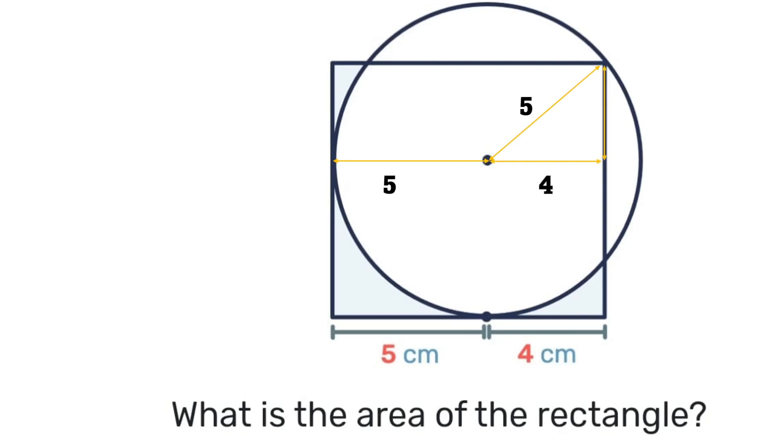That means we now have a right-angled triangle, and we can use Pythagoras's theorem where the hypotenuse is 5 and one of the remaining sides is 4. Substituting, we'll have x squared plus 4 squared equals 5 squared. 4 squared is 16, and 5 squared is 25.